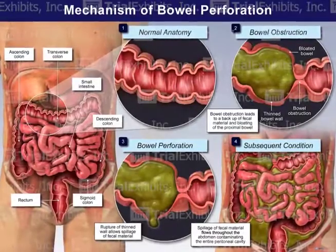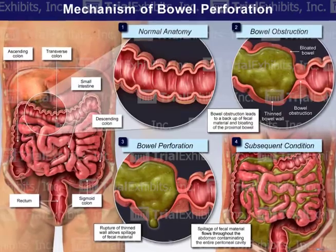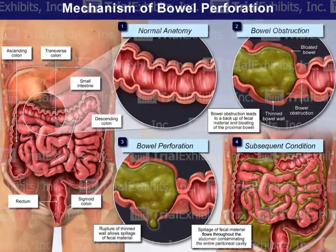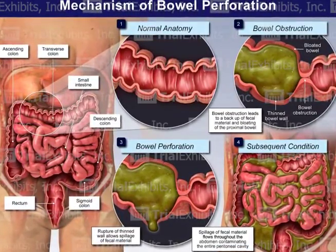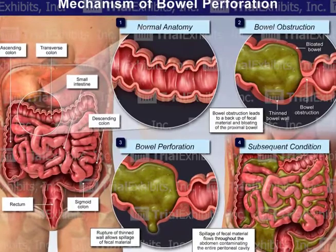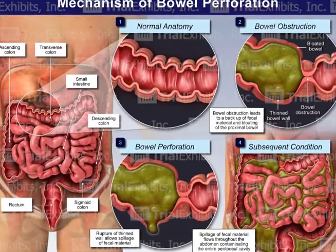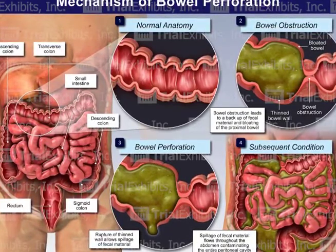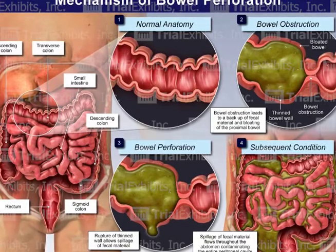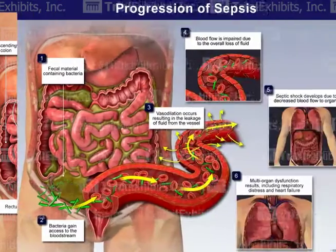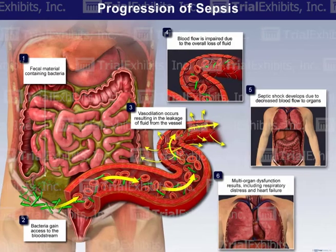In this case, the challenge was to explain how this patient rapidly deteriorated and eventually died from a condition starting with a bowel perforation. The trial exhibit solution was to create two exhibits: one showing the mechanism of the initial bowel perforation, and the second showing the progression of the sepsis that led to the eventual heart attack.